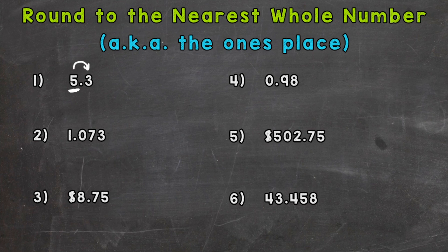Well, three is less than four, so rounding to the nearest whole number, five and three tenths is closer to five than it is to six. Let's take a look at number two.